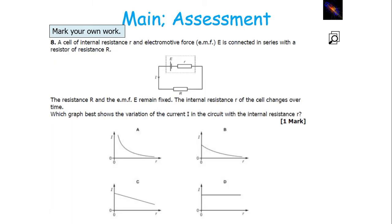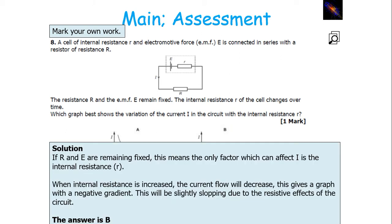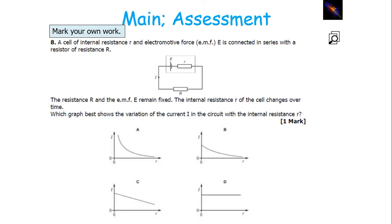In this circuit, there is an internal resistance small r and an external resistance large R. The EMF E and the load resistor large R remain fixed, but the internal resistance small r changes over time. If R and E are remaining fixed, the only factor that can affect current is the internal resistance. When the internal resistance increases, the current flow will decrease, giving a graph with a negative gradient, and it'll also be slightly sloping due to the resistive effects of the circuit. So the answer would be B.